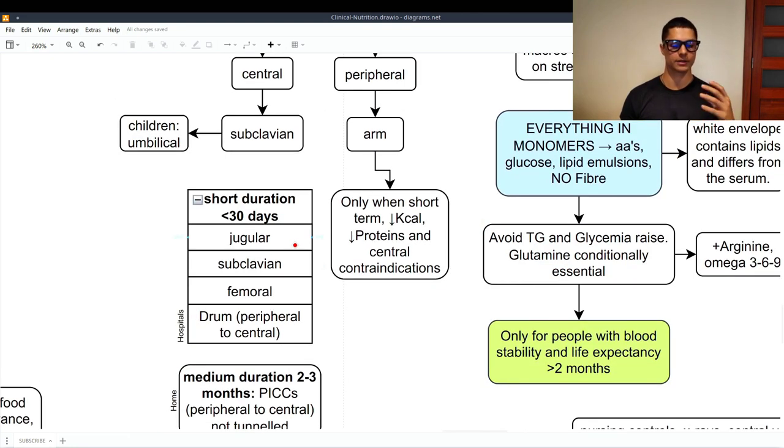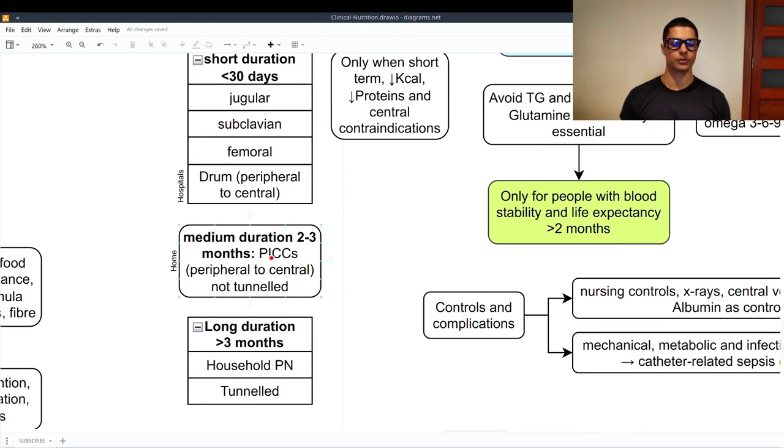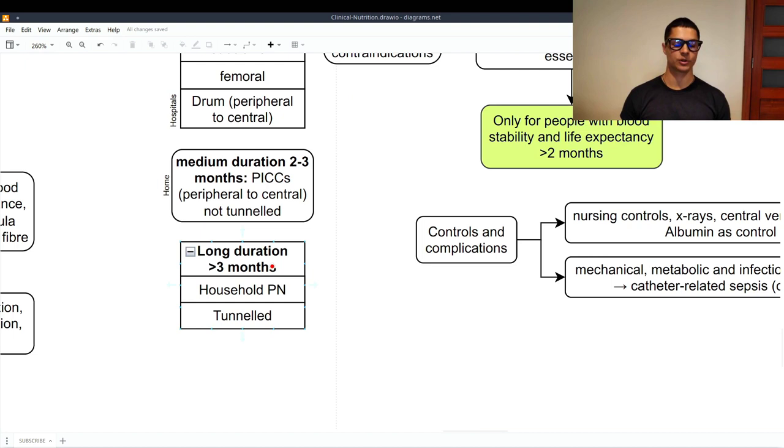So, there are certain types of accessing the circulation. The short duration, also less than 30 days, we can use the jugular, the subclavian, also the femoral, and in hospitals, the drum, which is from a peripheral to a central one. Medium duration, from two to three months, we use the PICCS, that goes from peripheral to central, but it's not tunneled, and it is done at home. And the long duration, so more than three months, we use the household parenteral nutrition, and it is tunneled.